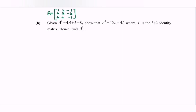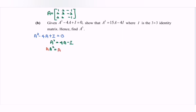Now referring to part B. Given the situation A squared minus 4A plus I equals 0, show that A cubed equals 15A minus 4I, where I is the 3x3 identity matrix, and hence find A cubed. By referring to the situation, rearrange and express A squared as the subject: A squared equals 4A minus I. Next, multiply both sides by A: A times A squared equals A times (4A minus I), giving 4A squared minus AI.